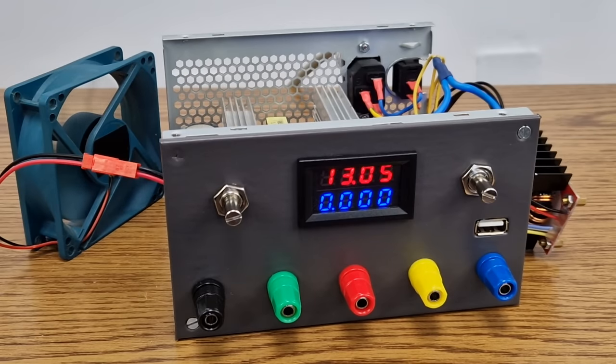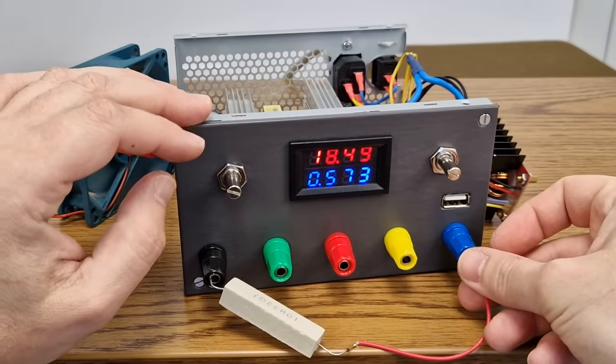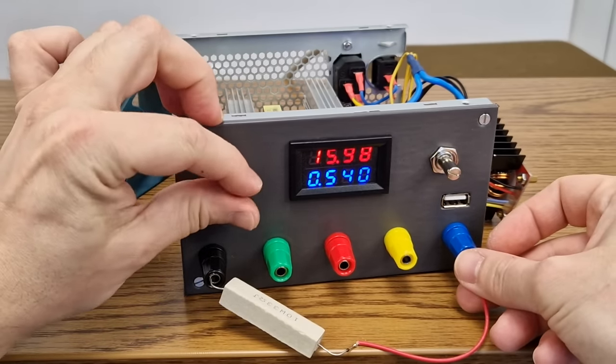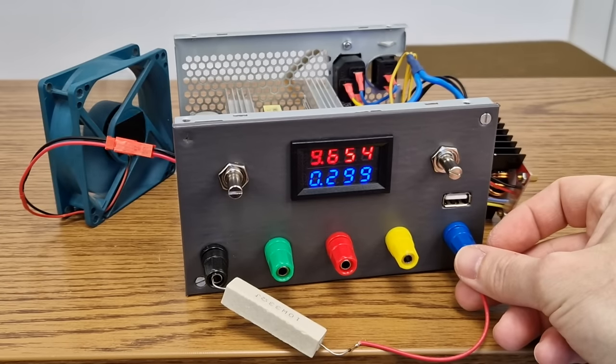When I decrease the voltage on the variable output, it has a delay of a few seconds. There is probably a capacitor at the output of the converter that holds the charge. But when you connect a load and decrease the voltage is fine. If this doesn't bother you, you can leave it as it is, but I want to improve the response time.